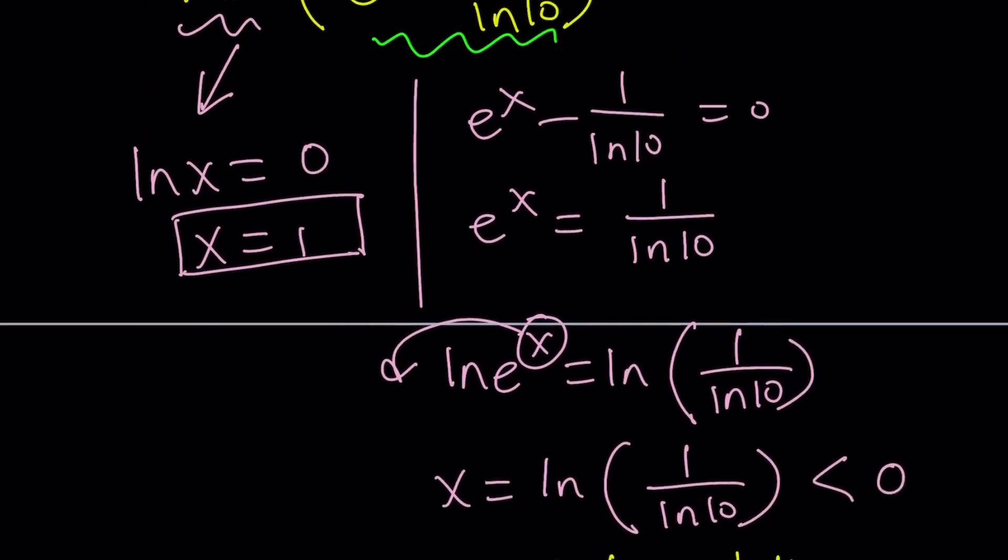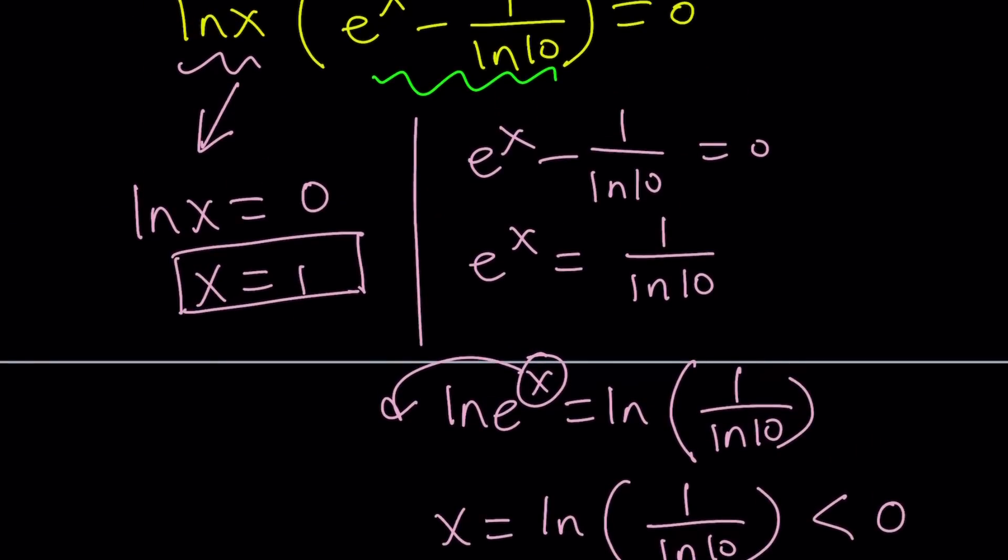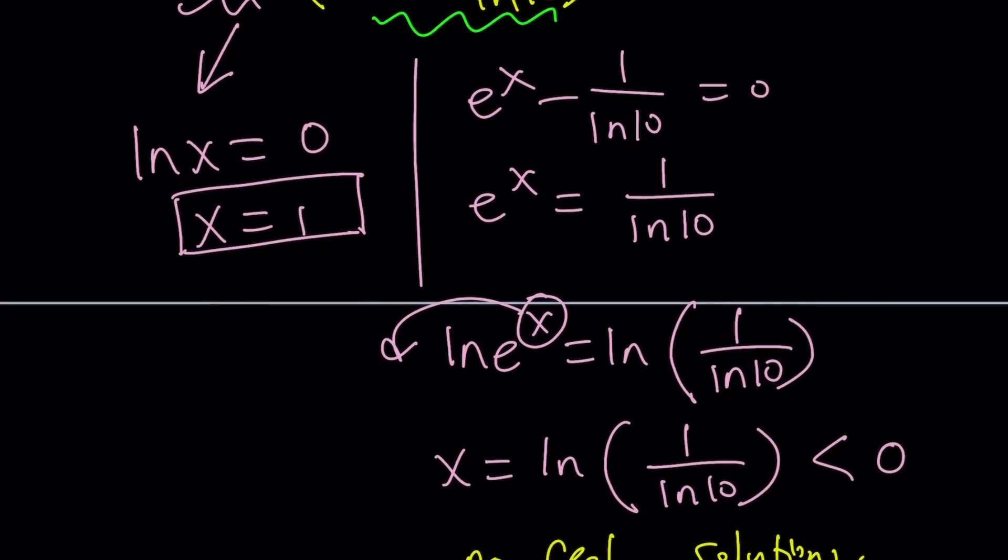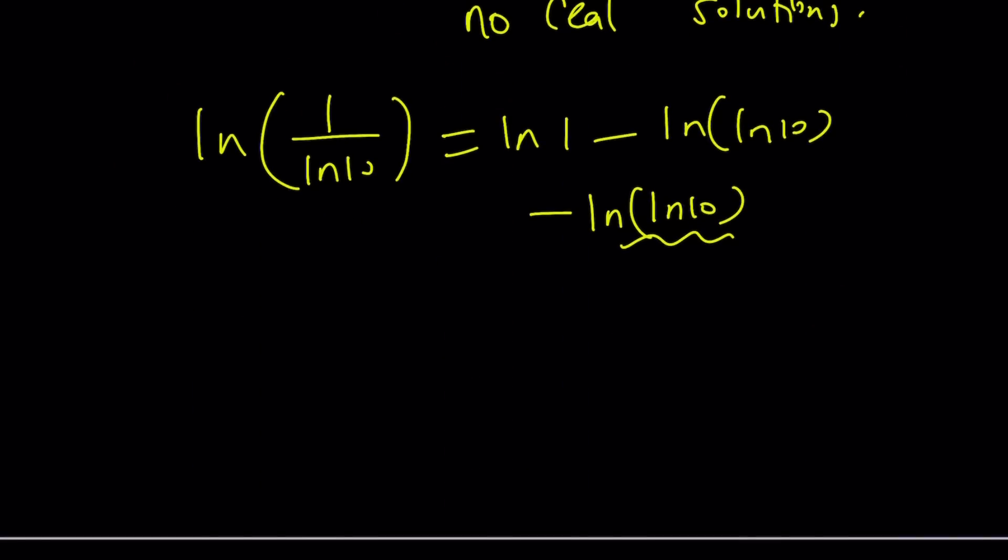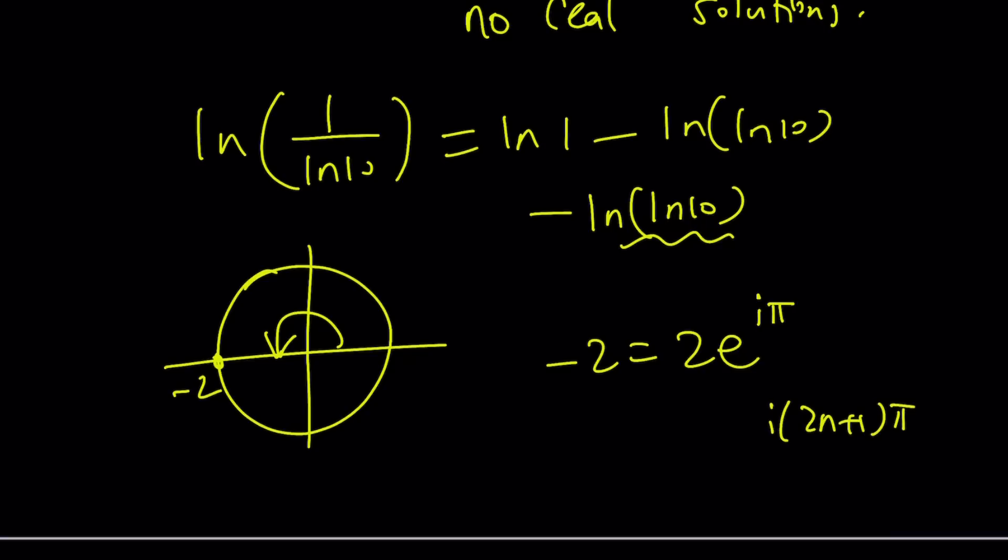We can write this as a complex number and then solve the problem. You can basically just consider this number. If you have a negative number, let's say you're trying to write negative 2 as a complex number, you would look at the angle. That's going to be pi. So you would write negative 2 as 2 times e to the power i pi. Of course, you can also add multiples of 2 pi, or you can write this as 2n plus 1 times pi, which is going to be all the branches. This is just the principal branch. And then you can just go from there. You have to ln both sides one more time.